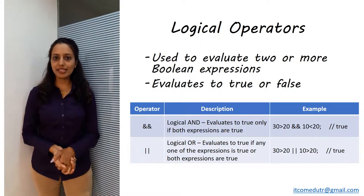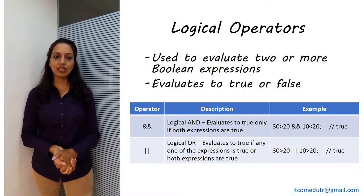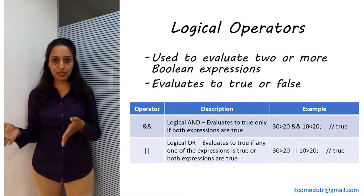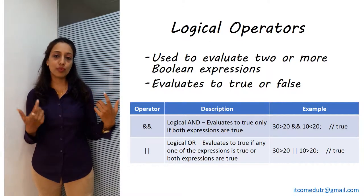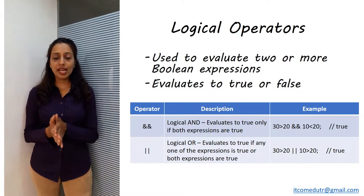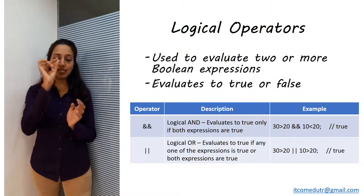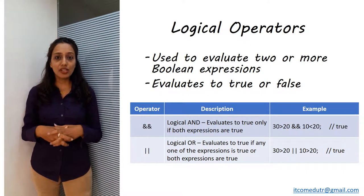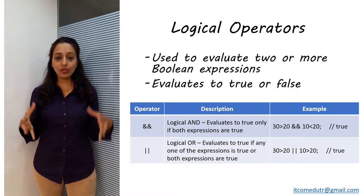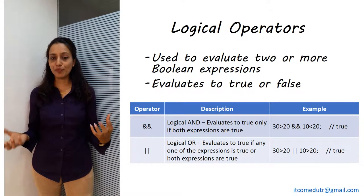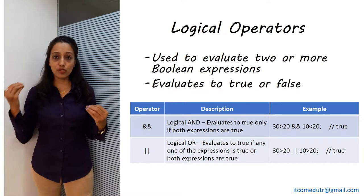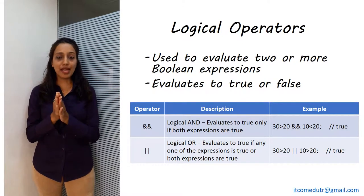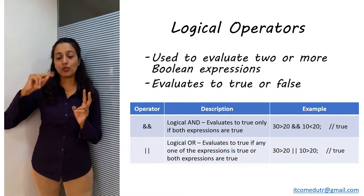Now let's take the next set of operators, that is the logical operators. The logical operators are a little different. They work on two boolean expressions and they will also evaluate true or false based on what is the result of either or both of the two logical expressions. So for that we have two logical operators. The first one being the double ampersand symbol which is called the logical AND, and the two bars symbol which is called the logical OR. The logical AND will return true only if both the left and the right boolean expressions evaluate to true. For example, if 30 greater than 20 is true, and 10 less than 20 is also true, then the combined result will be true. If either of them returns false, then AND will return false.